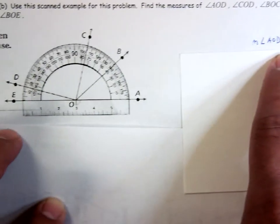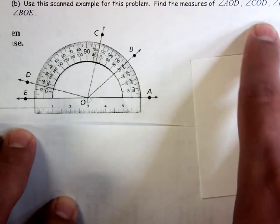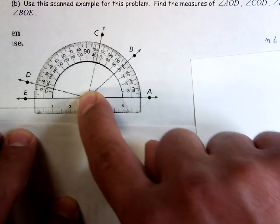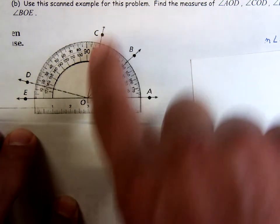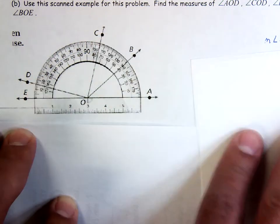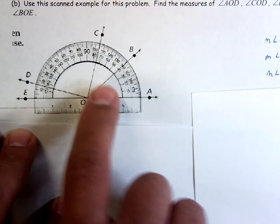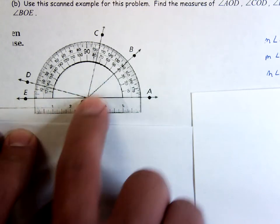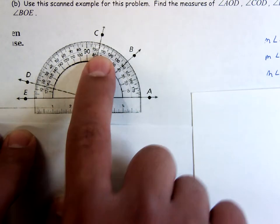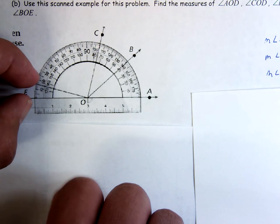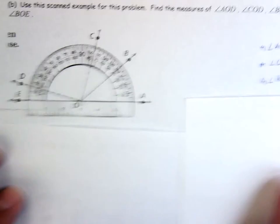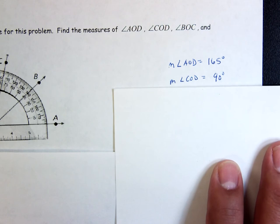Now we're going to go to COD. Put your fingers on it. COD looks to me like I can take the bigger angle and I can subtract this smaller angle, and it'll give me the measure of angle COD, which looks to me like it's 90 degrees. We'll do some protractor stuff in class.